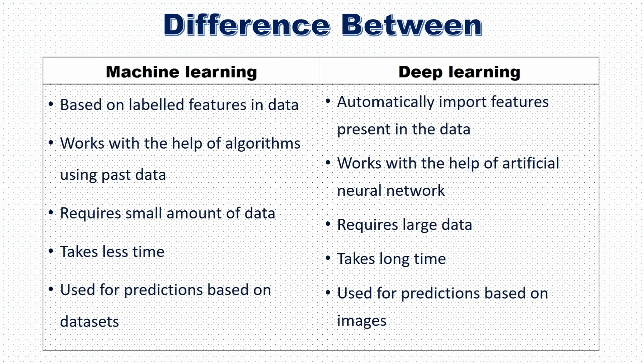Let's see the difference between machine learning and deep learning. Machine learning works based on labeled features in the data, while deep learning extracts features on its own. Machine learning works with the help of algorithms using past data, while deep learning uses artificial neural networks. Machine learning requires a small amount of data, but deep learning requires very large data — we saw 25,000 images total (12,500 dog and 12,500 cat). Machine learning takes less time due to small data, while deep learning takes a long time. Machine learning is used for predictions based on datasets, and deep learning is used for predictions based on images.